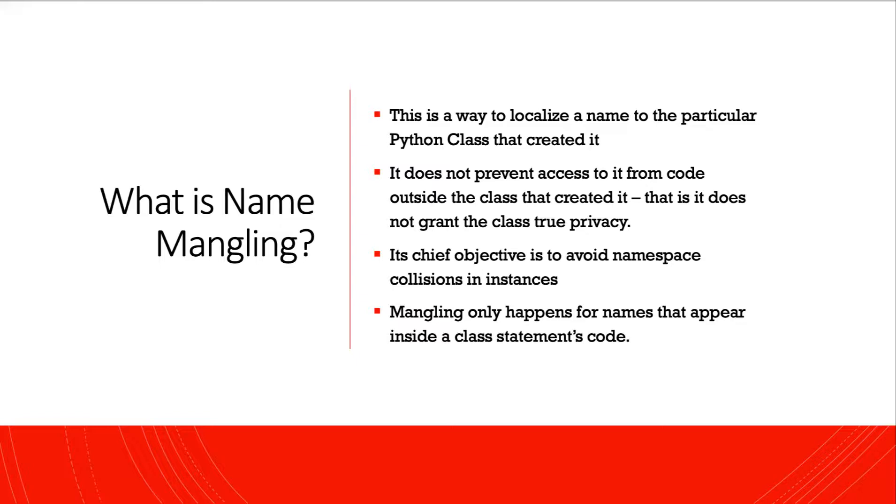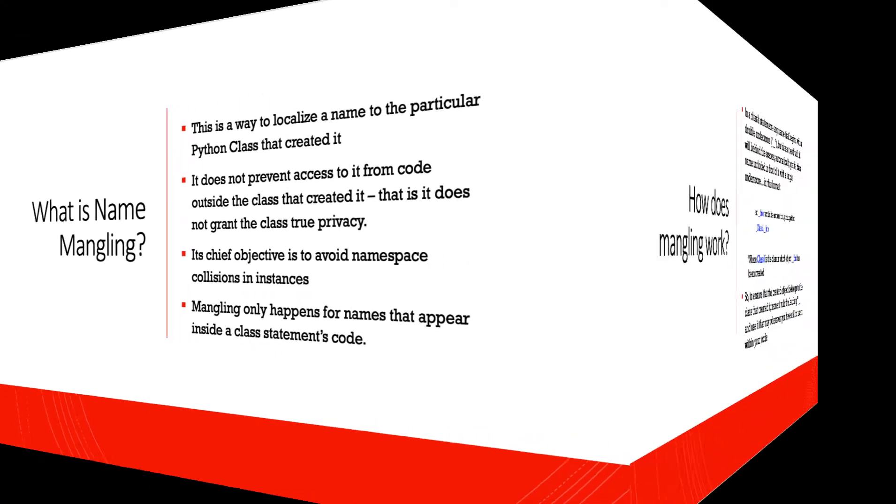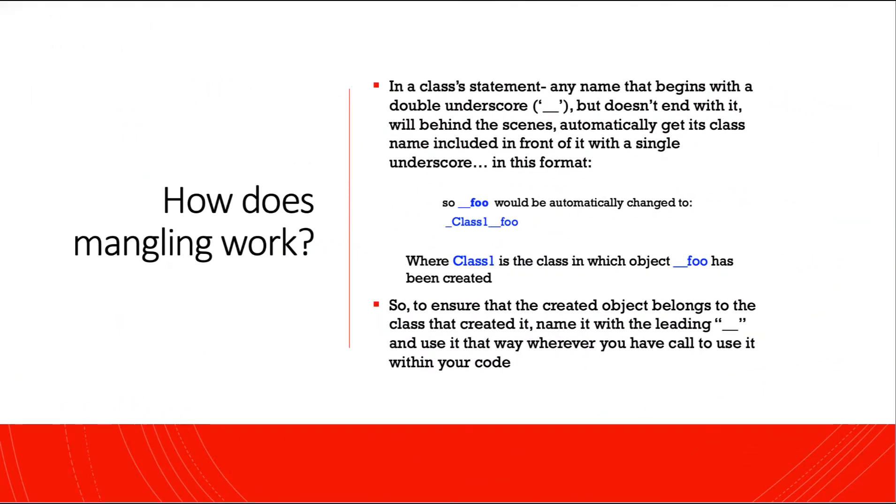Mangling only happens for names that appear inside a class statement's code. So how does name mangling work? In a class's statement, any name that begins with a double underscore but doesn't end with it will behind-the-scenes automatically get its class name included in front of it with a single underscore.